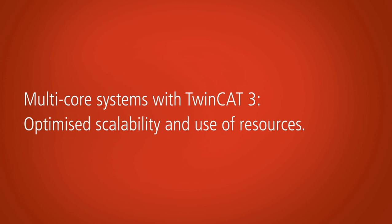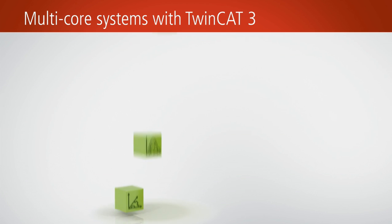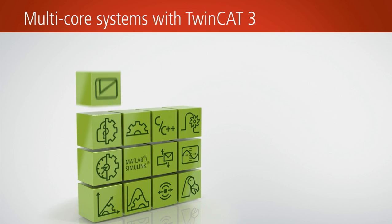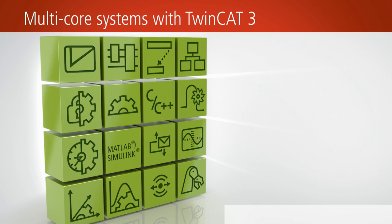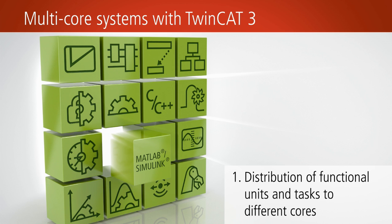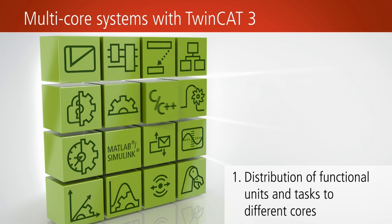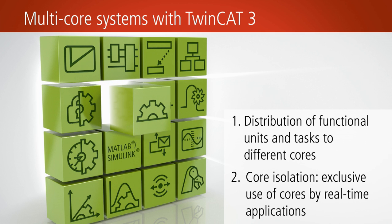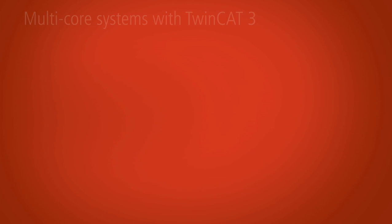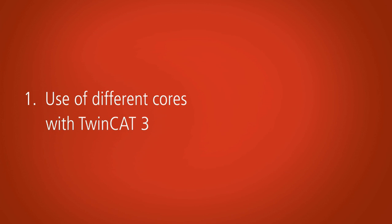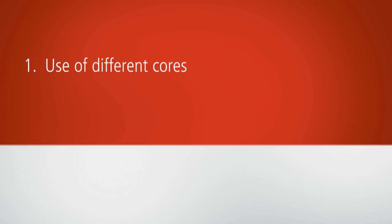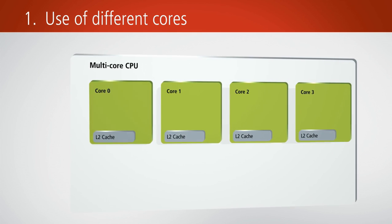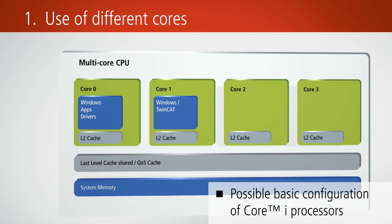The TwinCAT automation software integrates active multi-core support. TwinCAT 3 enables an optimised scaling and utilisation of multi-core systems. Real-time tasks can be distributed to different cores and individual cores can be exclusively used for real-time applications. Modern multi-core systems provide extensive power reserves that can be used for PC-based control technology.